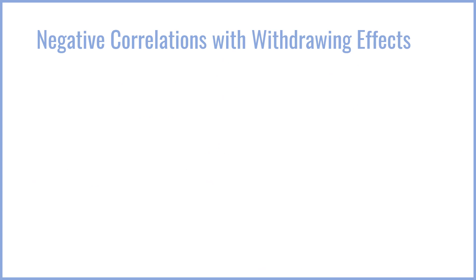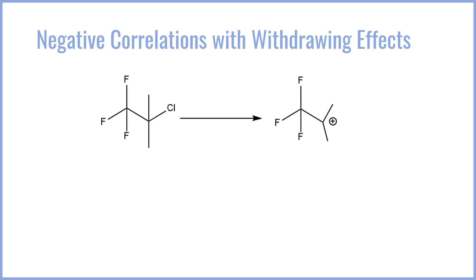Now let's talk about negative effects on cation stability — things that actually reduce stability and the rate of SN1 reactions. This typically happens when you have an electron-withdrawing species that steals electron density, making the cation even more electron-deficient and therefore more unstable. A classic example is putting halogens near the cation. Halogens are very strongly inductively withdrawing, and if you have enough of them you can really strongly destabilize the cation. For example, a trifluoromethyl group adjacent to a tertiary chlorine — you would think it's tertiary so the chlorine can leave — however, the inductive effect of the three fluorines creates a dipole pulling electron density away from the cation, making it very unstable. As a result, this species is not amenable to an SN1 process even though it's tertiary.